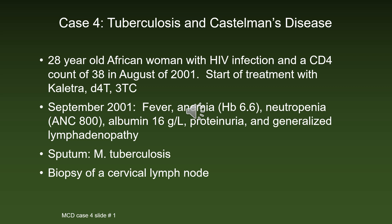Case 4 is a 28-year-old African woman with HIV infection and a CD4 count of only 38 in August of 2001. She was started on Kaletra, d4T and 3TC. In September of 2001, she developed fever, anemia, neutropenia, hypoalbuminemia, proteinuria, and generalized lymphadenopathy. In the sputum, M. tuberculosis was found.